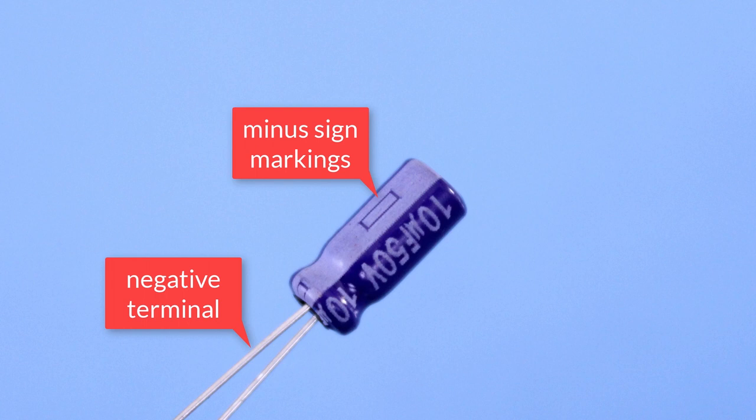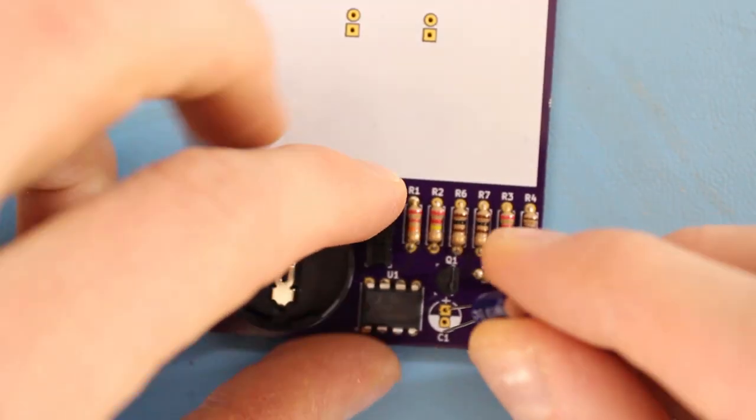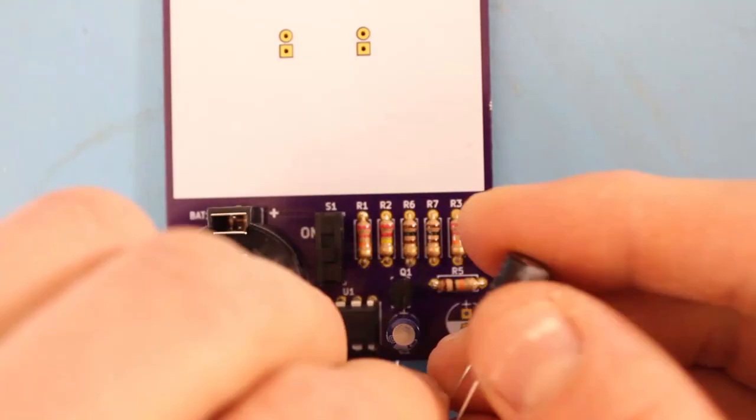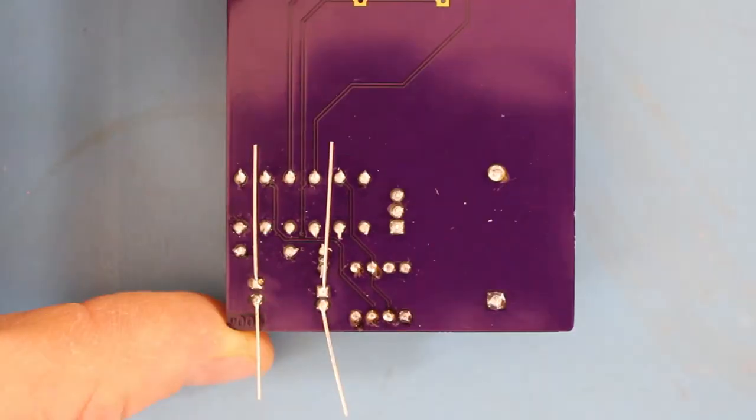Take C1 and look for the minus sign markings down one side. This is the negative terminal and it should be placed in the through hole with the filled-in semicircle. Bend the leads to hold it in place. Do the same for C2. Solder all four connections and then clip the leads.